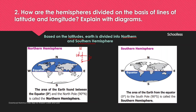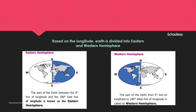The equator divides Earth into the Northern Hemisphere above and the Southern Hemisphere below. Based on longitude: from 0 degrees to 180 degrees east is the Eastern Hemisphere, and from 0 degrees to 180 degrees west is the Western Hemisphere.